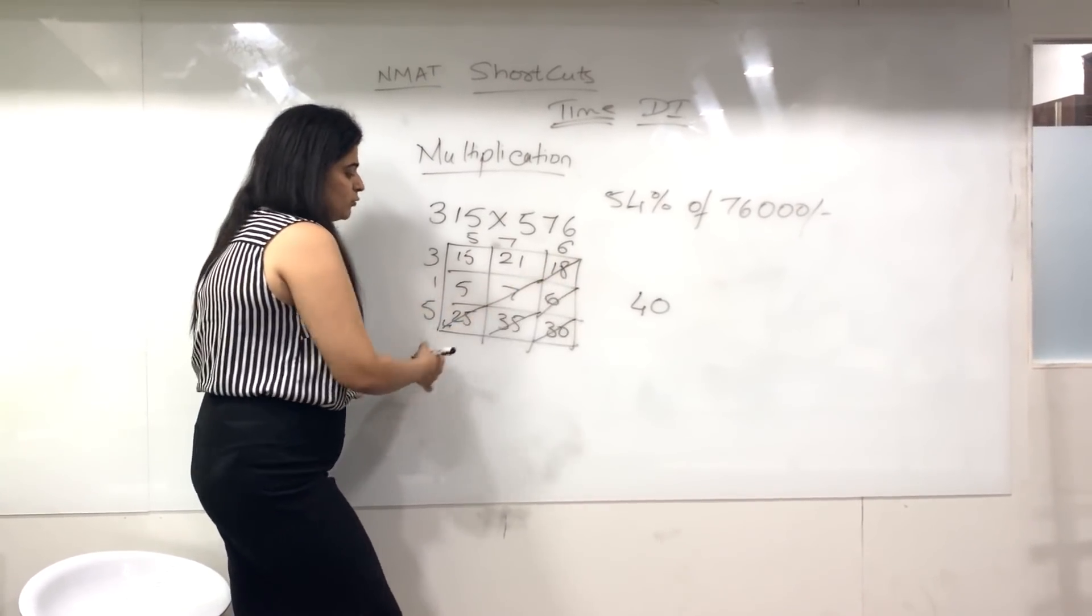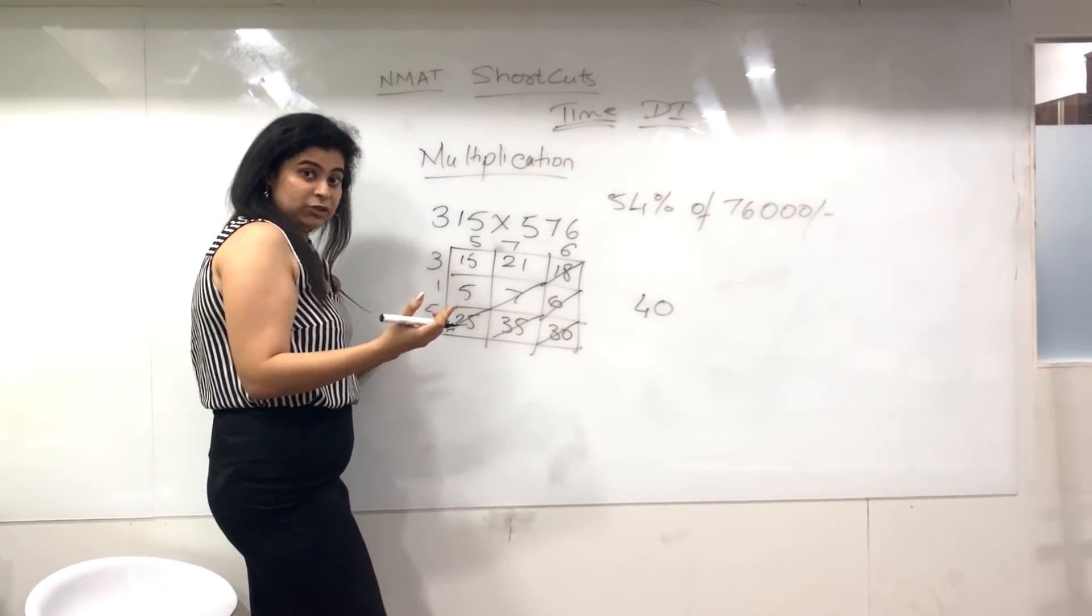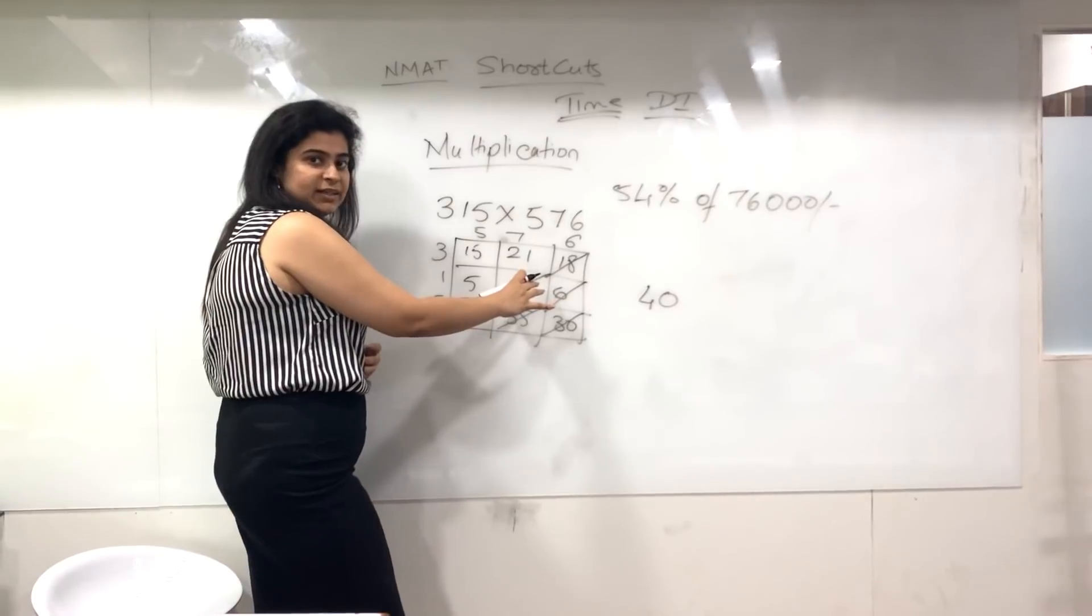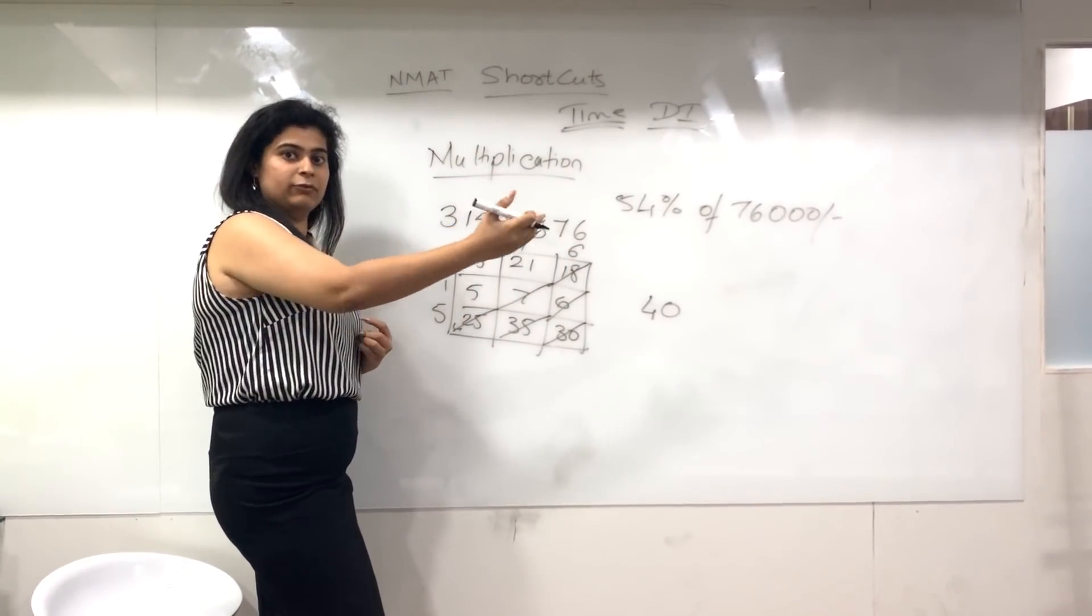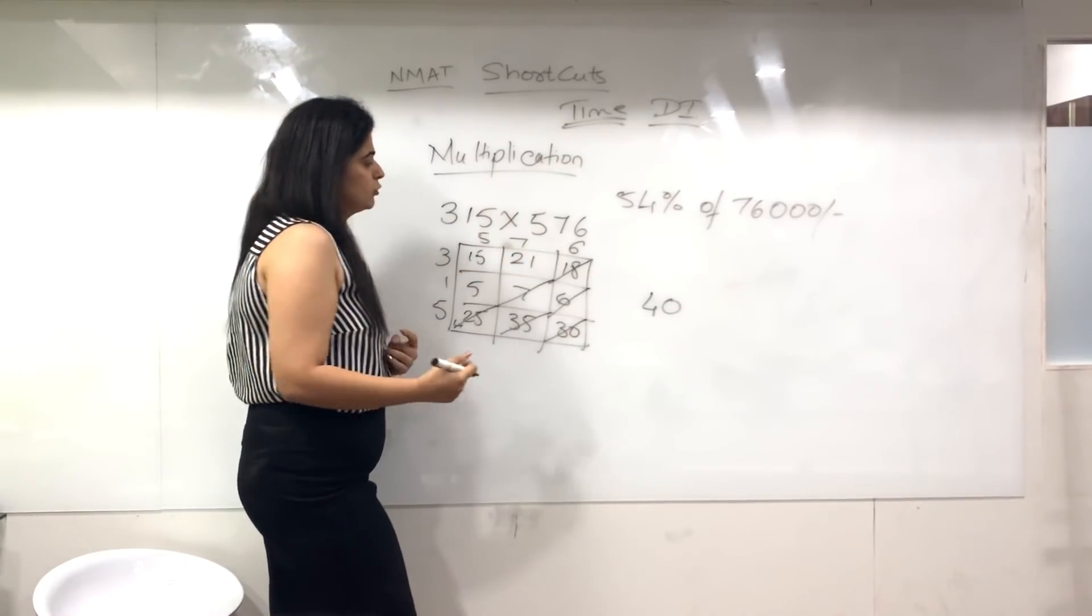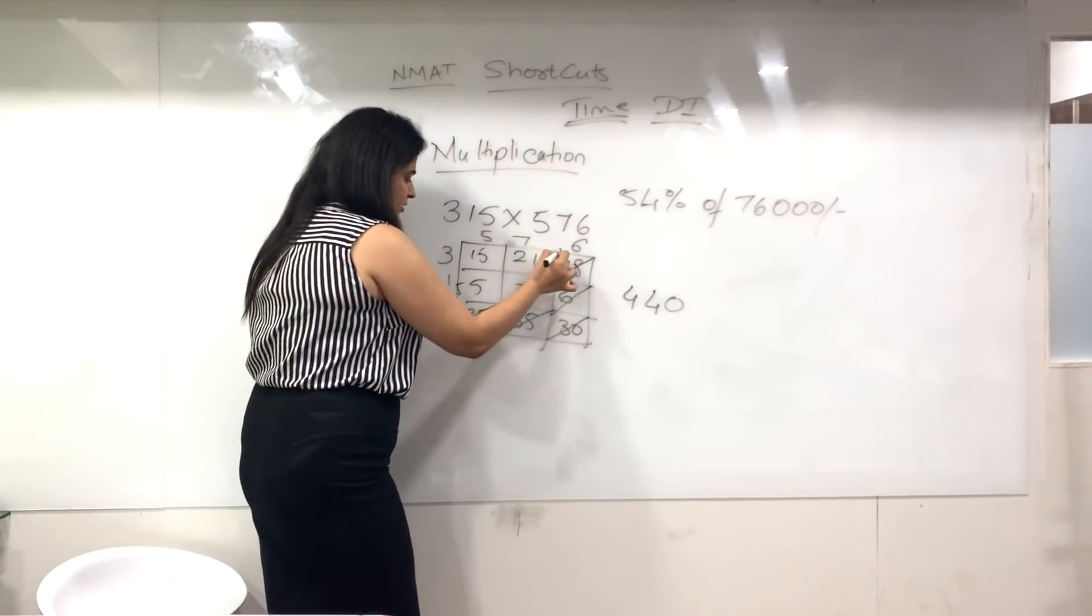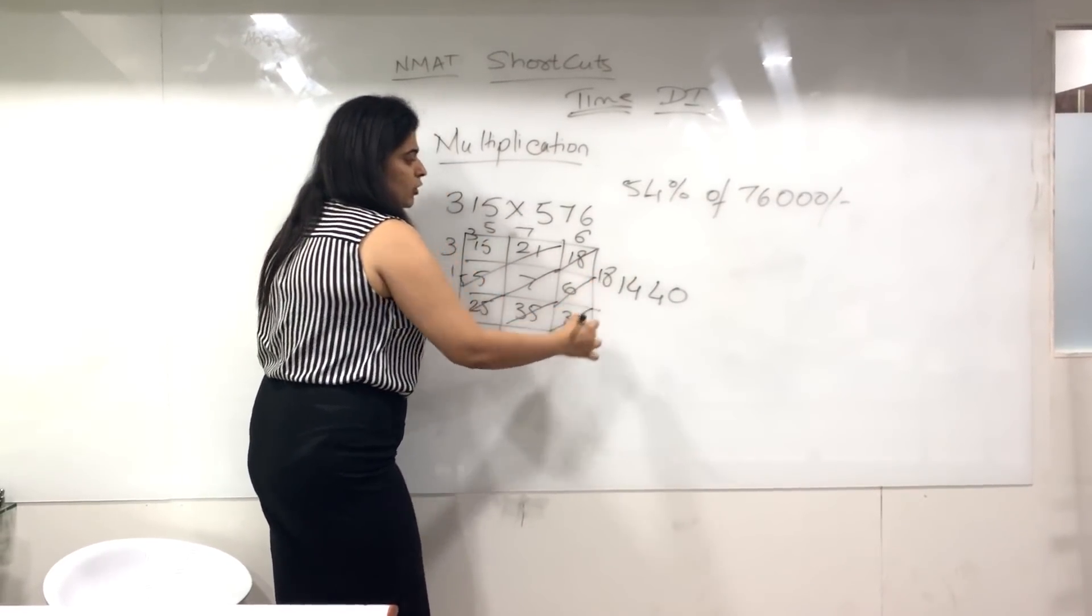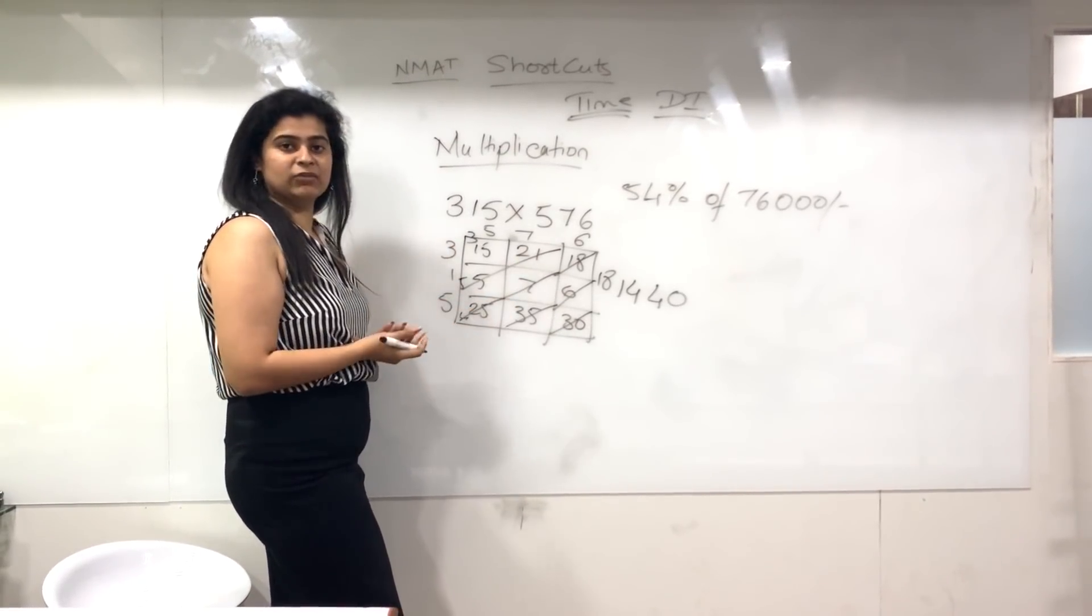That's 36 plus 18. To make calculations easy: 29 plus 7 is 36, 36 plus 18—you can do 36 plus 20 that is 56 minus 2 is 54. 4 is written, 5 gets carried forward making this 31, and finally that is 18. So that's my final answer from the 3 by 3 matrix.